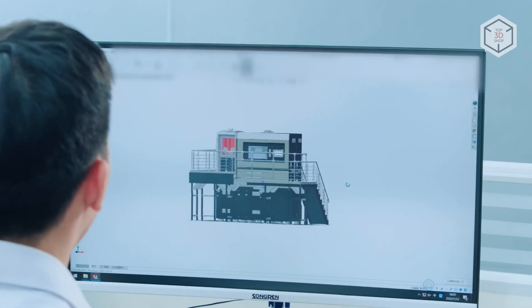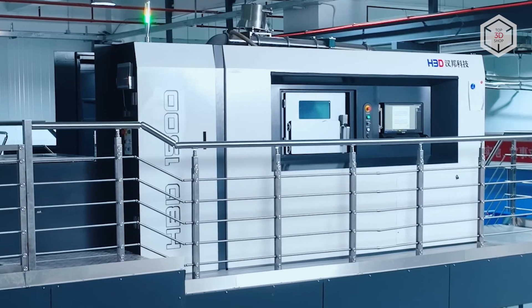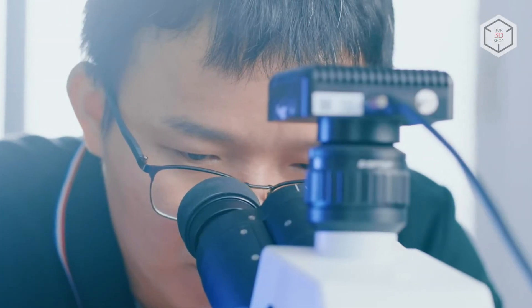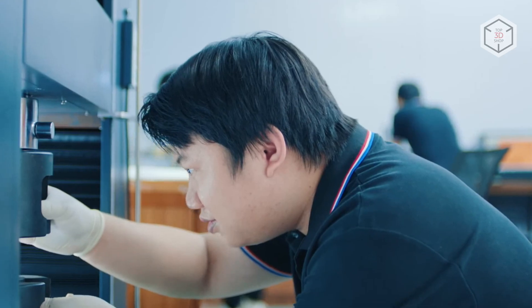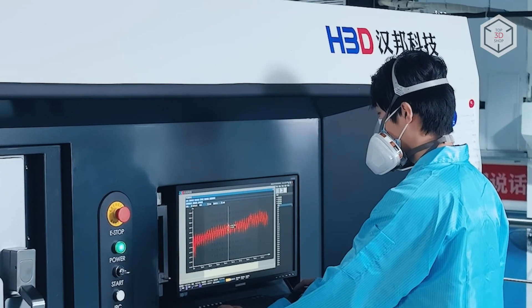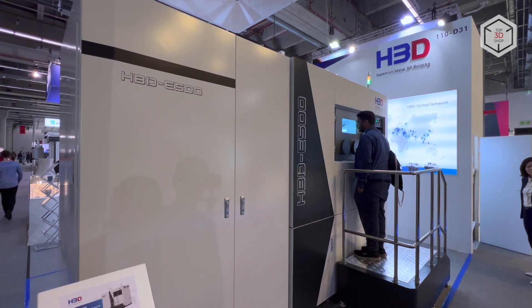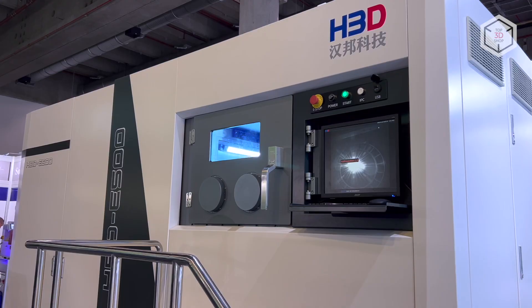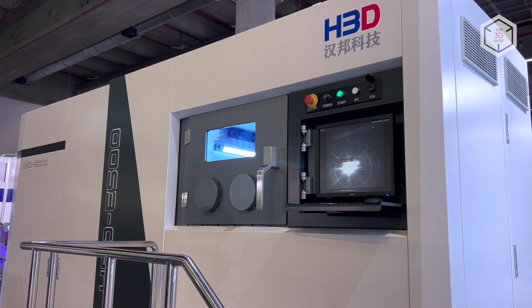Chinese company HBD entered the metal 3D printing industry in 2007. Since then, the manufacturer has expanded its range of equipment and released more than a dozen new models of industrial printers. The HBD E500 is one of the most in-demand selective laser melting machines in the company's lineup.